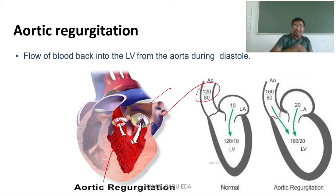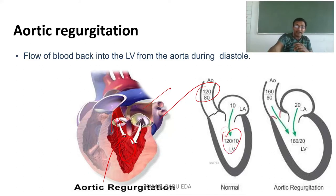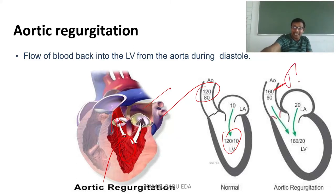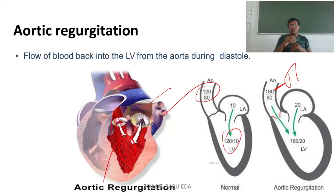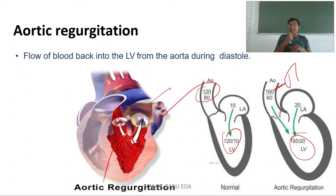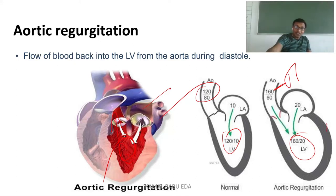Normally, aortic pressure is 120/80. In aortic regurgitation, systolic pressure increases to around 160 and diastolic pressure drops to around 60, causing blood to re-enter the left ventricle. Both the systolic and diastolic pressures in the left ventricle increase, causing blood to pool and resulting in left ventricular hypertrophy.